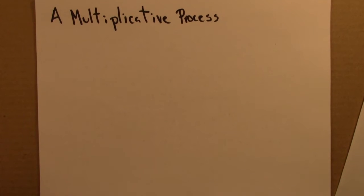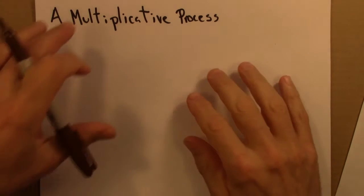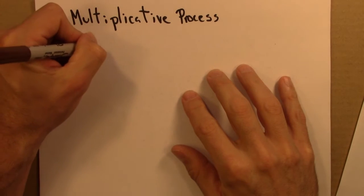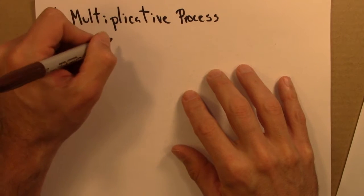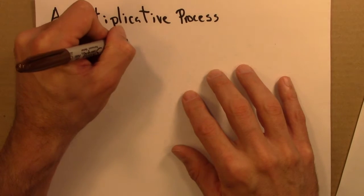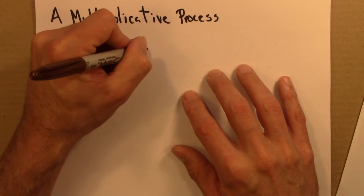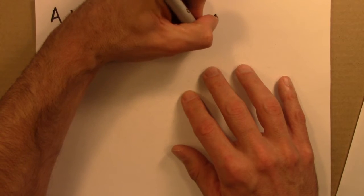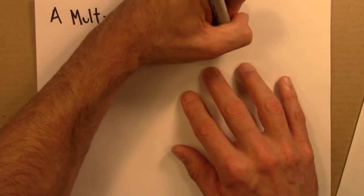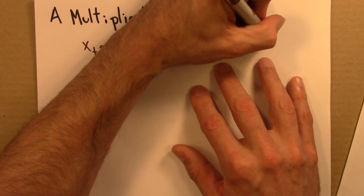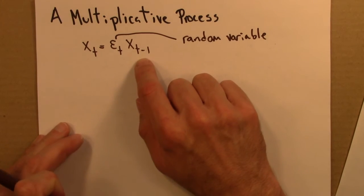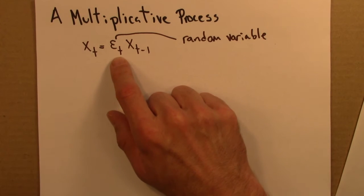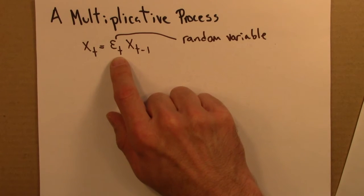So here is a simple multiplicative process. The idea is that we have a random variable that's multiplied by a random variable at every step. So we have some random variable, and it's multiplied by some other random variable, epsilon, at every time step.